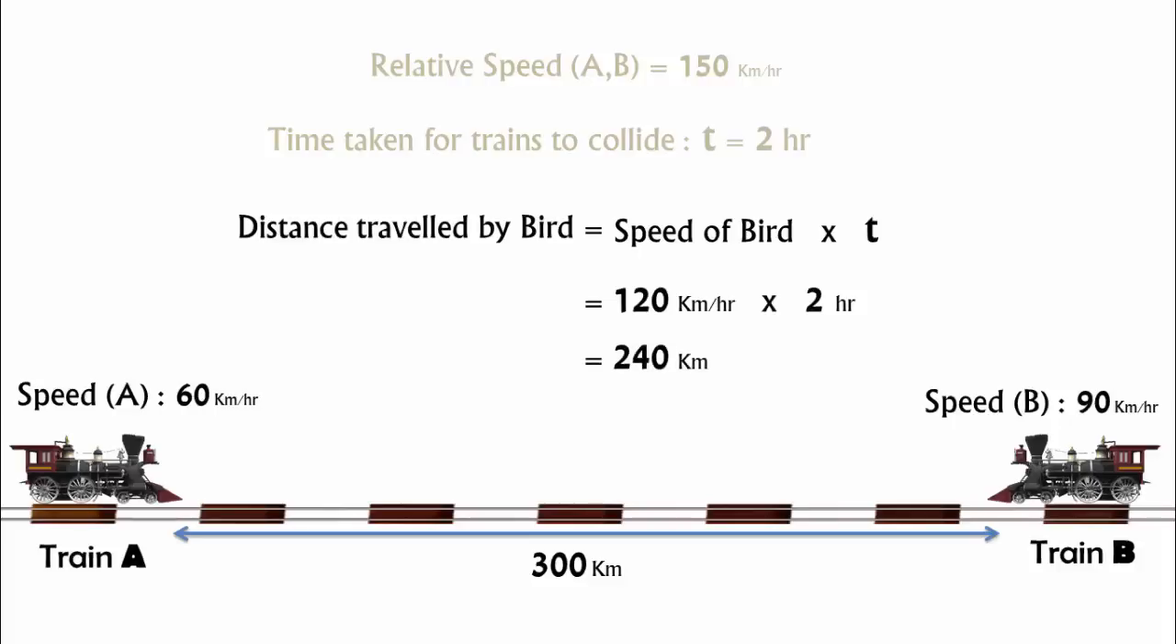In this duration of two hours, the distance traveled by the bird is equal to speed of the bird multiplied by the time taken for the collision of trains. So, it's 120 multiplied by 2, that's equal to 240 km.